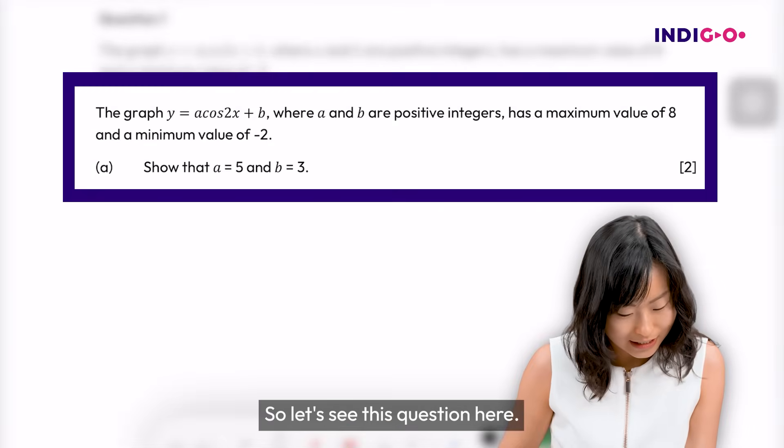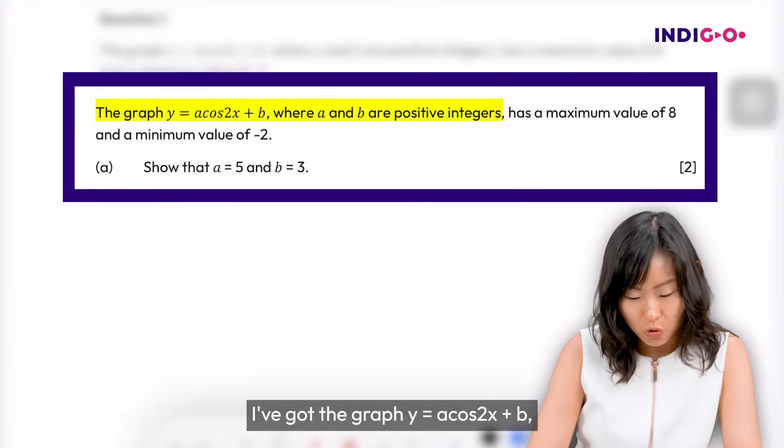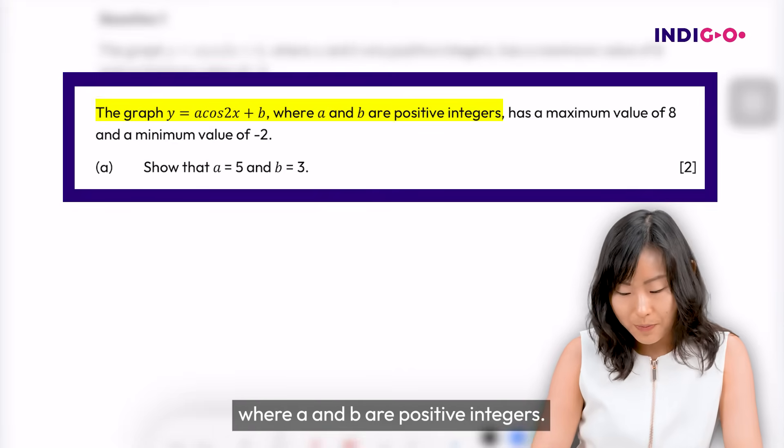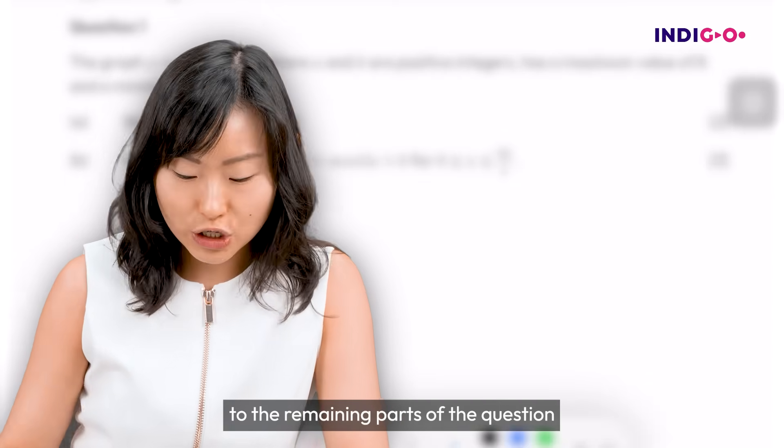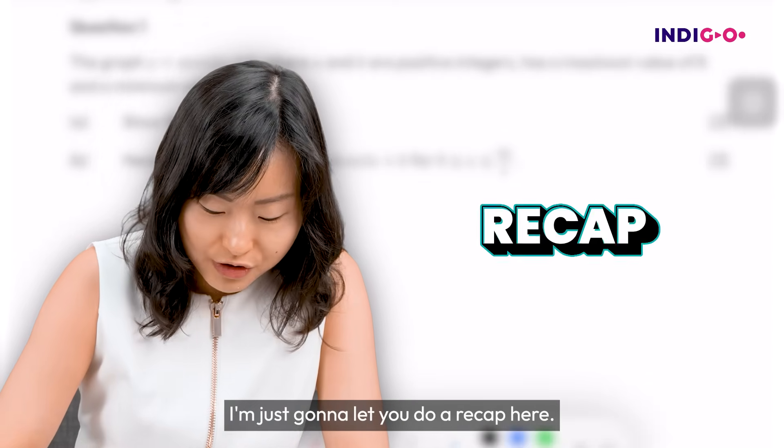So let's see this question here. I've got the graph y equals a cos 2x plus b, where a and b are positive integers. So before we go on to the remaining parts of the question, I'm just going to let you do a recap here.